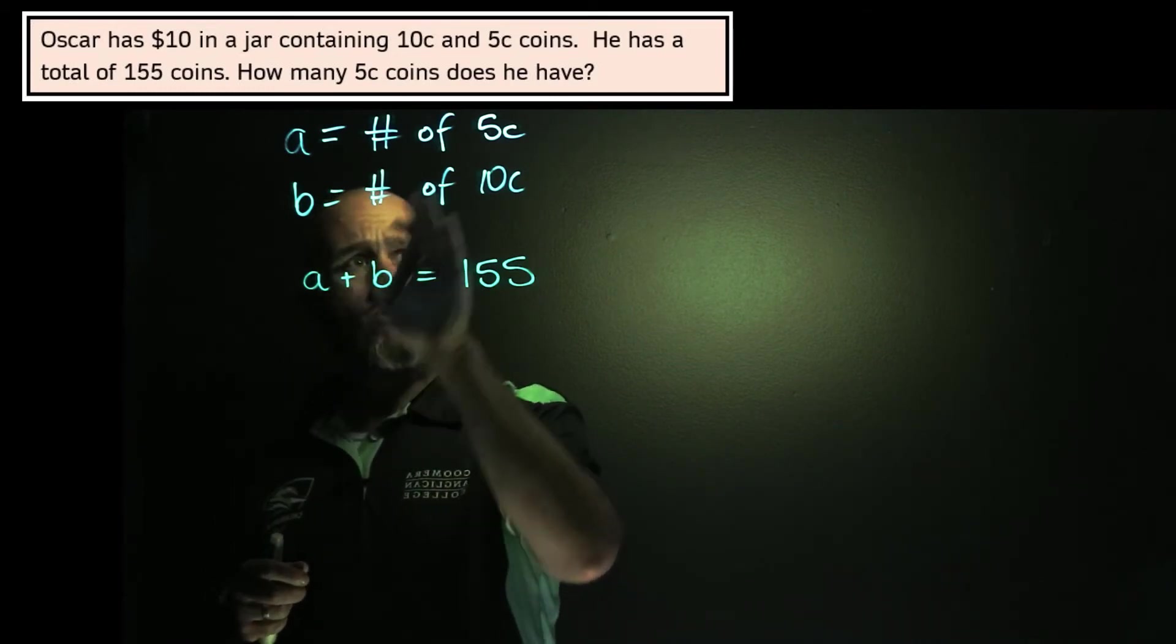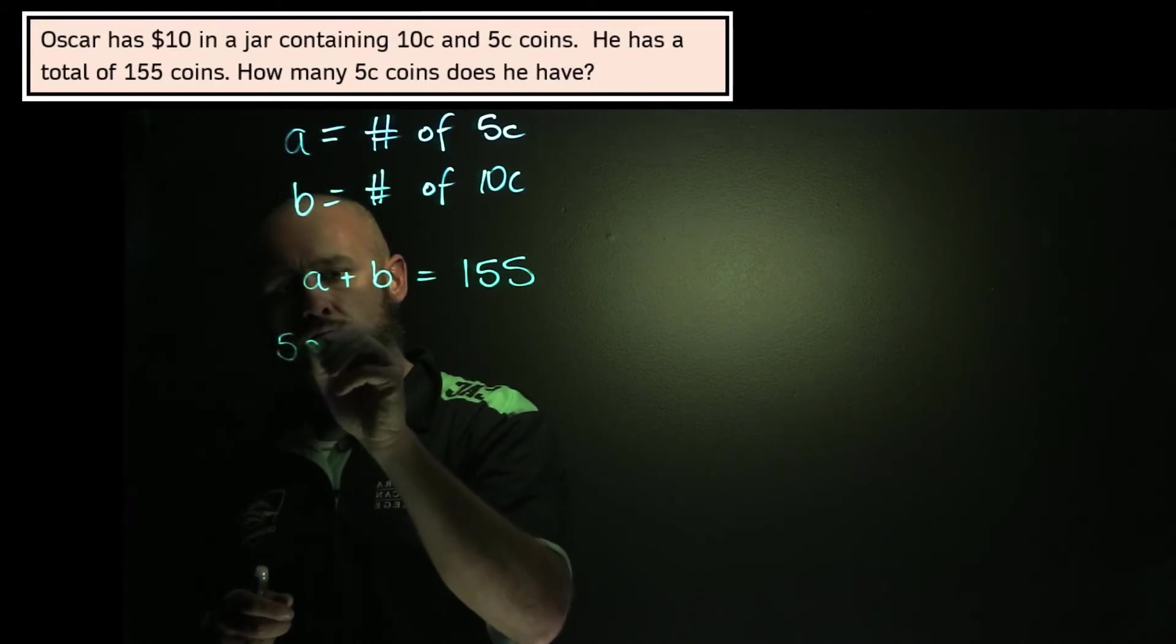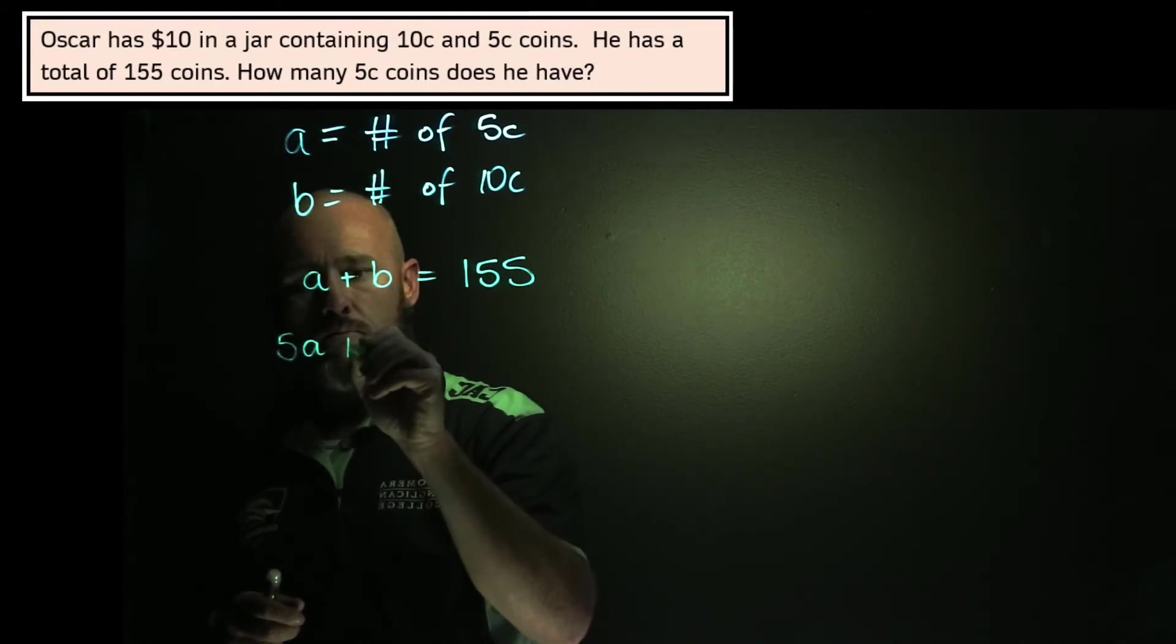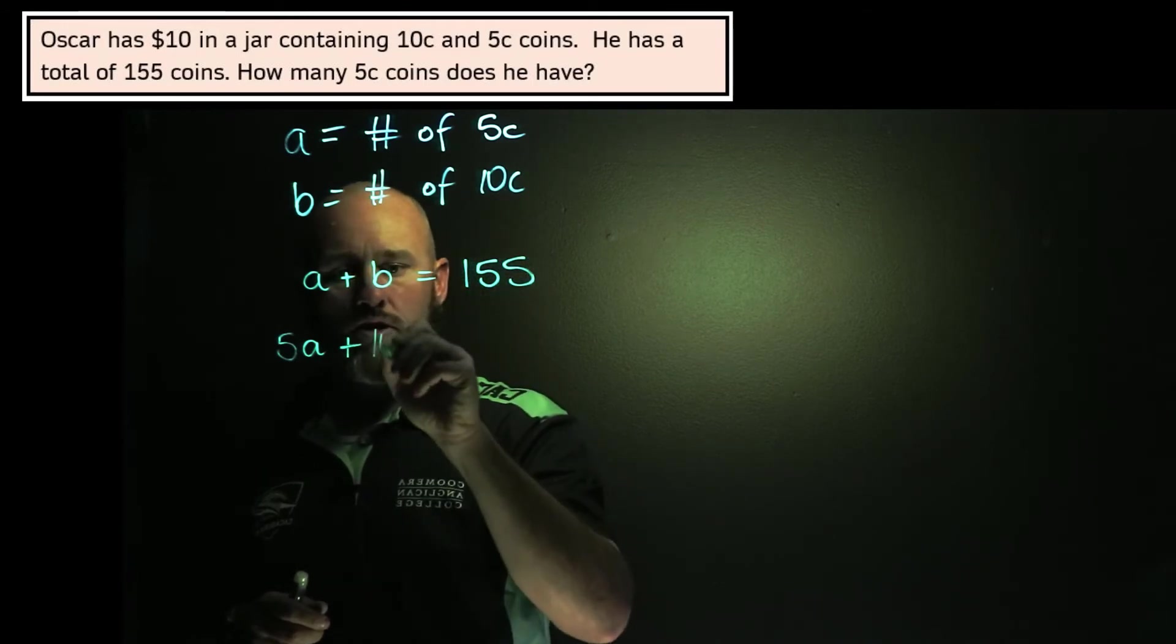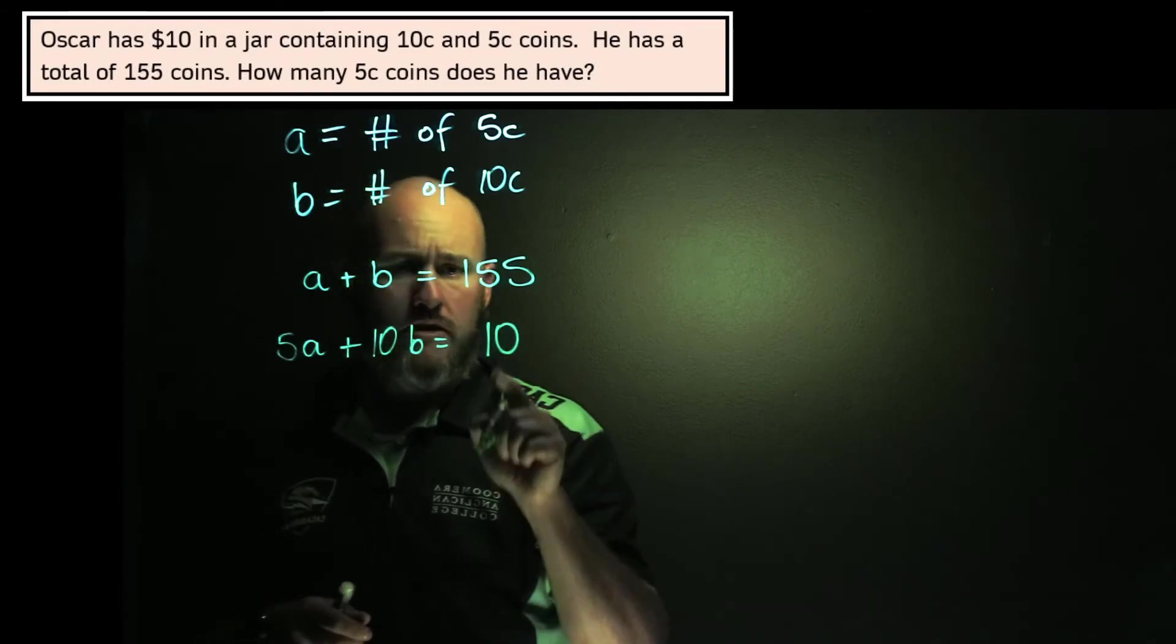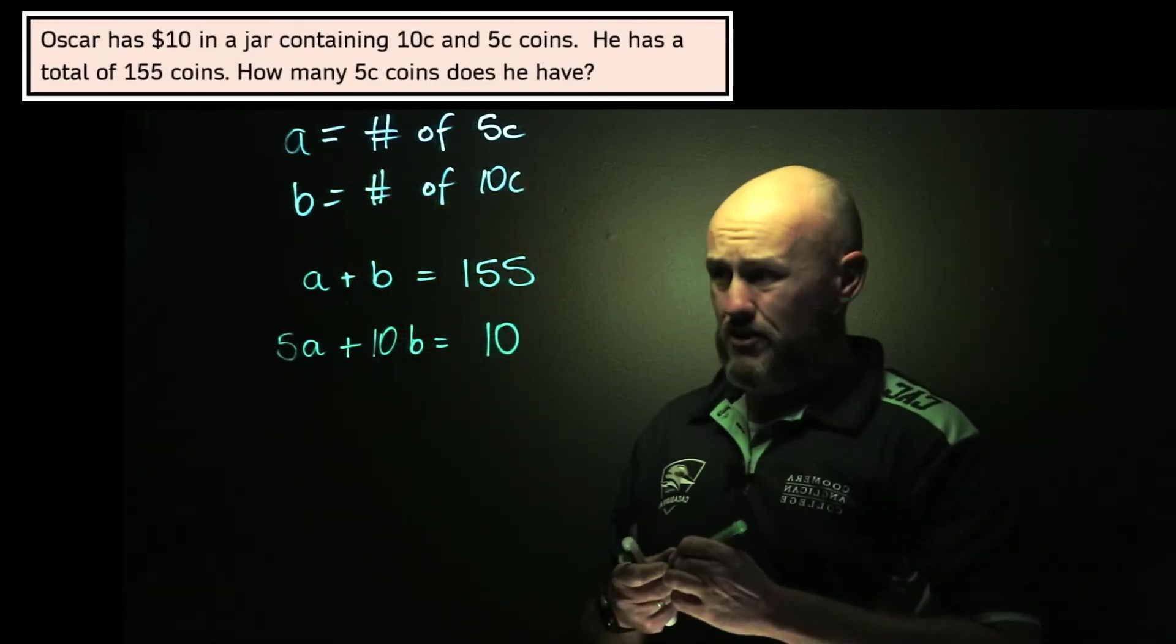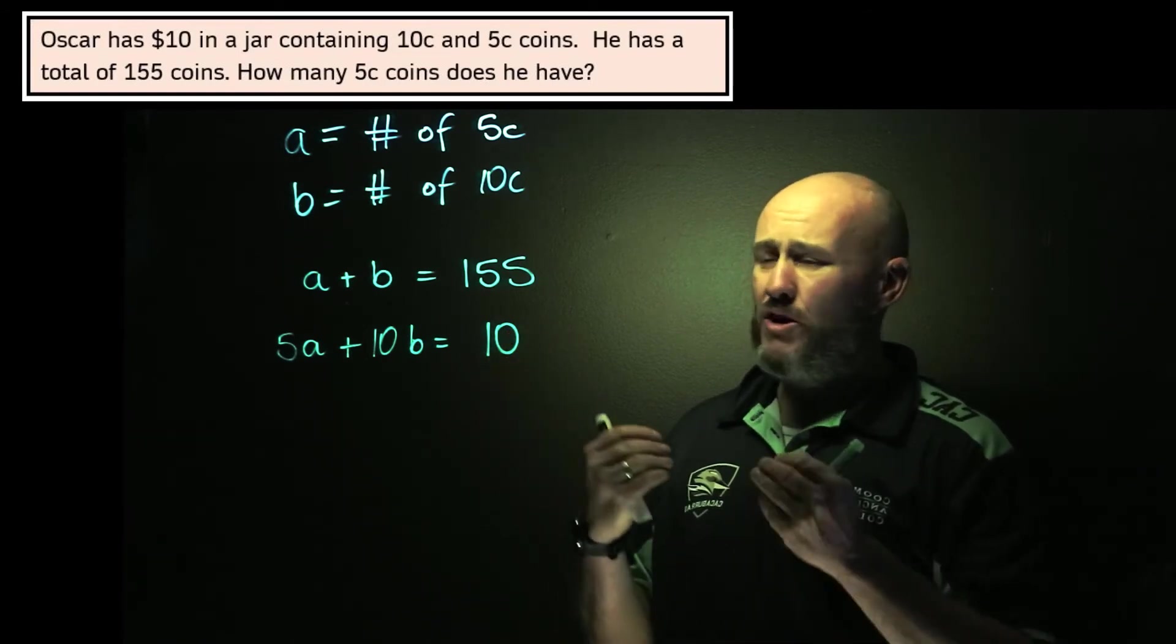So the number of A's, which are 5 cent coins, if I multiply that by 5, 5A plus the number of B's, and they're worth 10 cents, so I multiply that by 10, 10B is equal to $10. Now this is a bit of a trap, pitfall, really common. Again, my units are an issue.